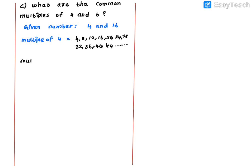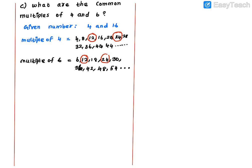Next, write the multiples of 6: 6, 12, 18, 24, 30, 36, 42, 48, 54 — and it goes on continuously. Now look at which numbers are common in both lists. 12 appears in both; 24 appears in both; 36 appears in both. These common numbers keep repeating.